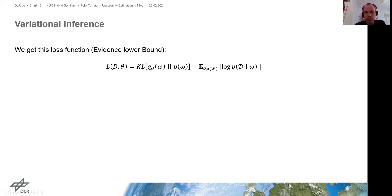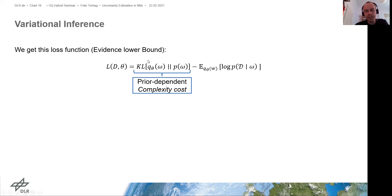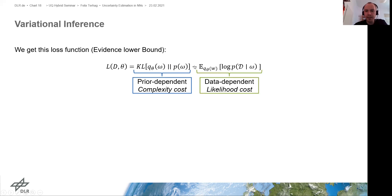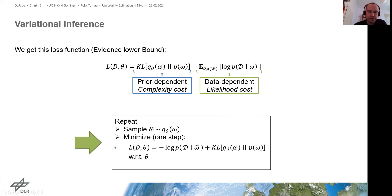This loss consists of two terms: the first part is the KL divergence between q and the prior — the prior-dependent complexity cost — which ensures you don't go too far from the prior; and the second part is the data-dependent likelihood cost, which ensures that you fit the data well. So it's a trade-off between staying close to the prior and fitting the data well.